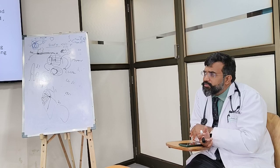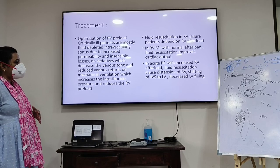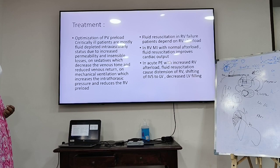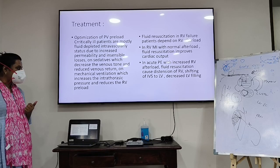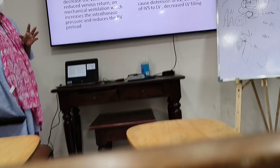Treatment of RV failure: optimization of preload, optimization of afterload, and improving contractility. In critically ill patients, most are fluid-depleted due to increased permeability, insensible losses, sedatives decreasing venous tone, and mechanical ventilation increasing intrathoracic pressure — all reducing RV preload. Fluid resuscitation in RV failure depends on the RV afterload. In right ventricular MI, where afterload is normal, fluid resuscitation improves cardiac output.